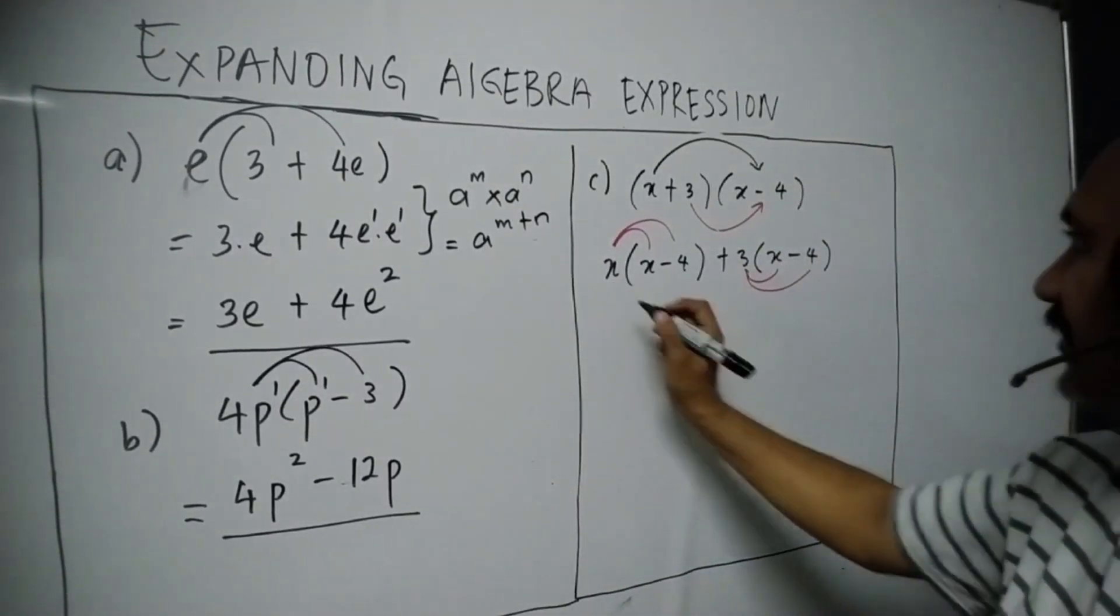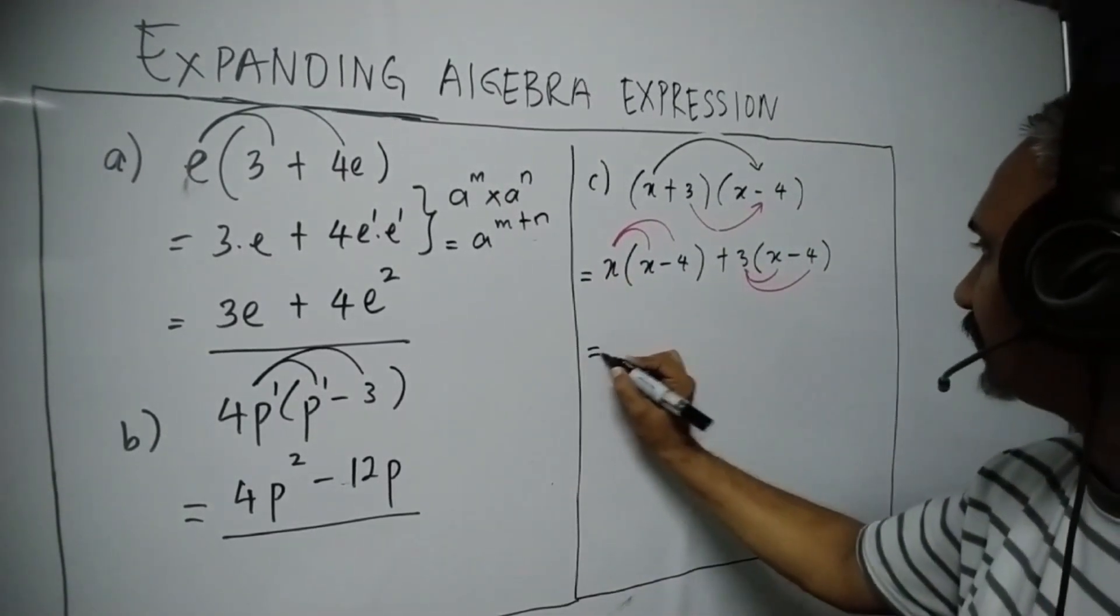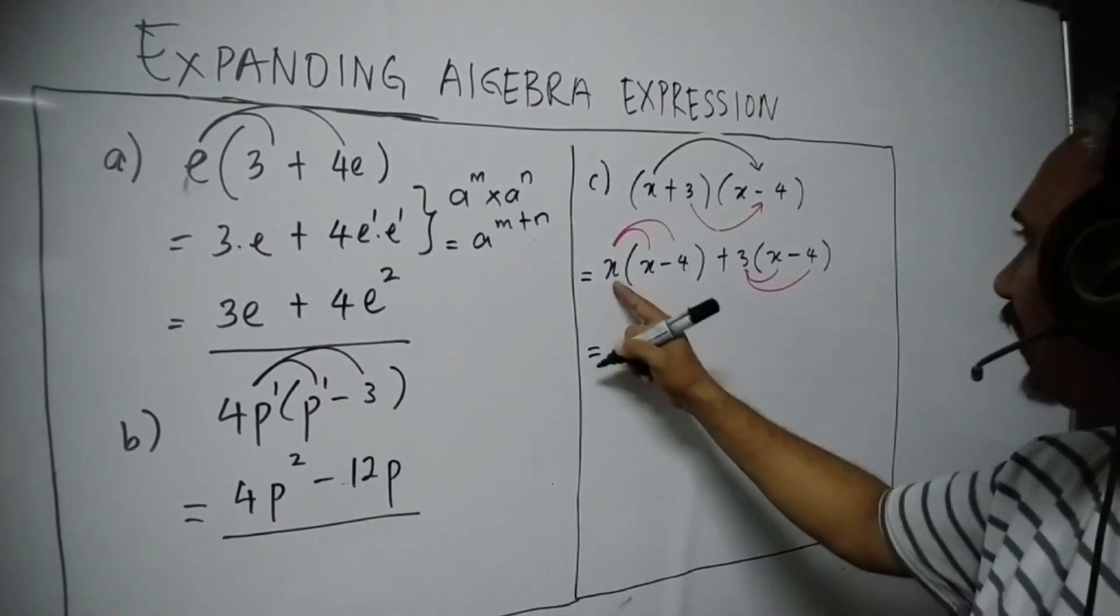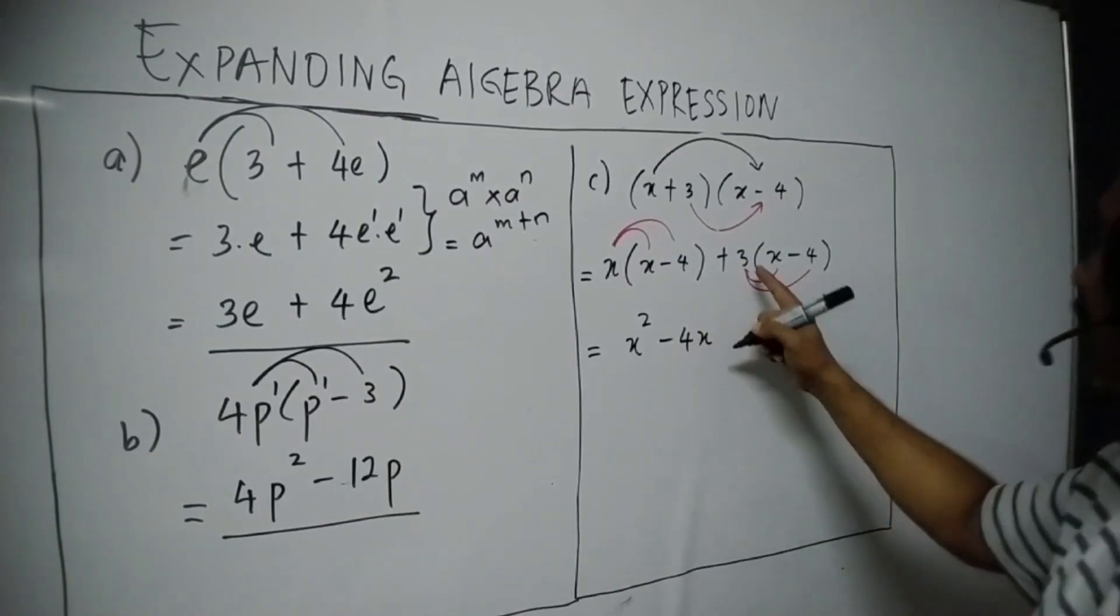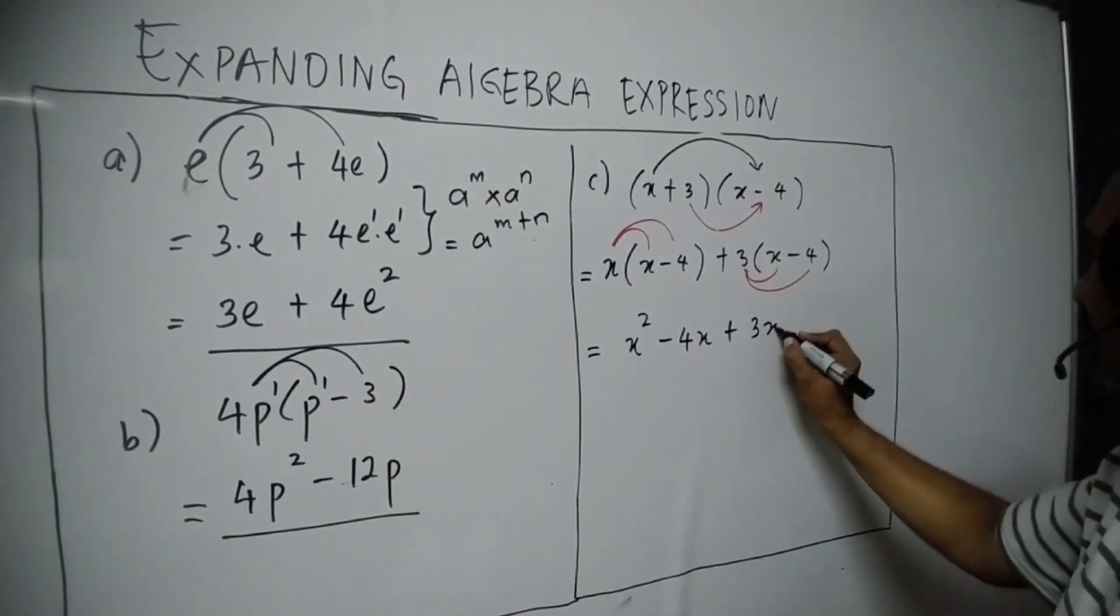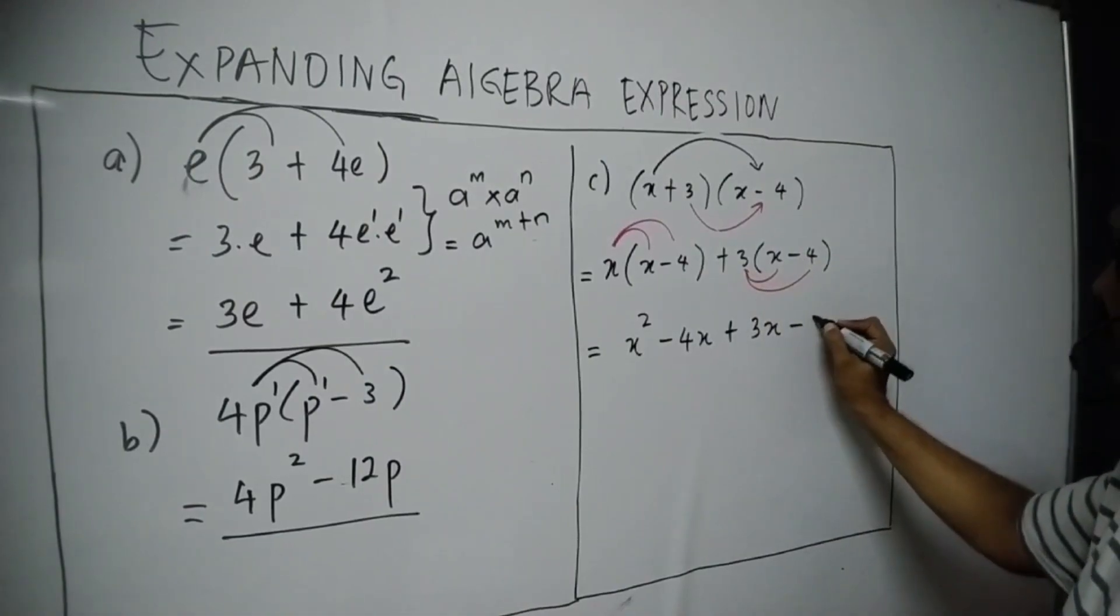So, X times X is X power of 2. X times negative 4 is minus 4X. 3 times X is plus 3X. 3 times negative 4 is minus 12.